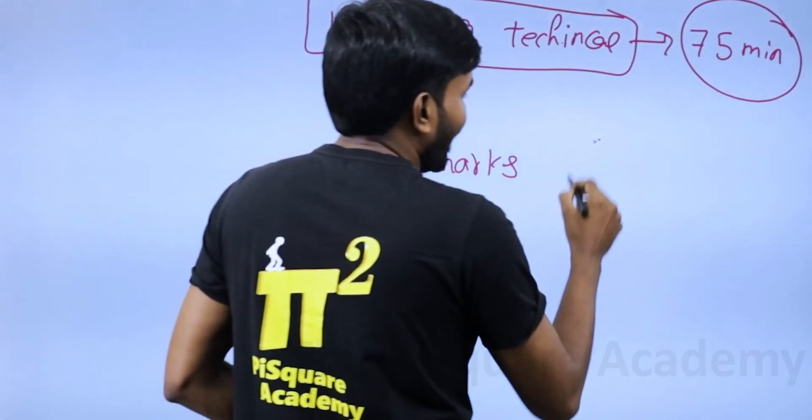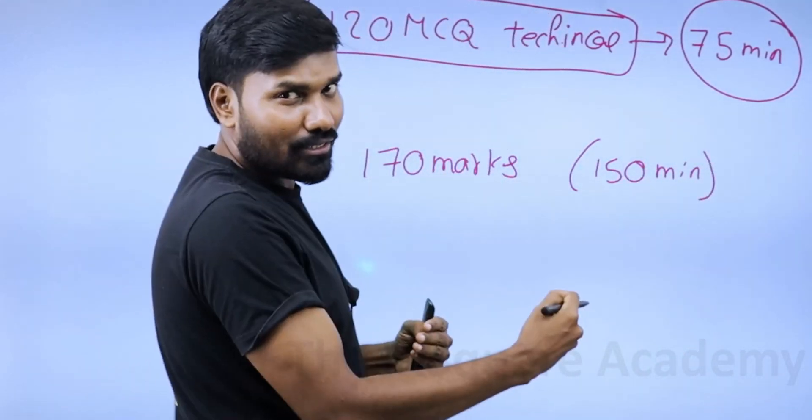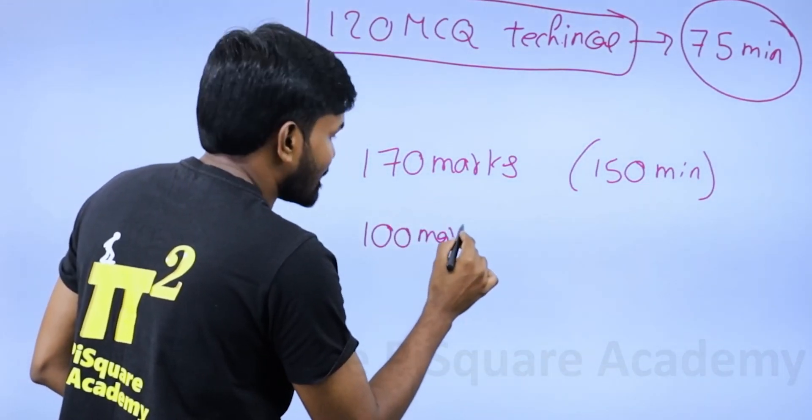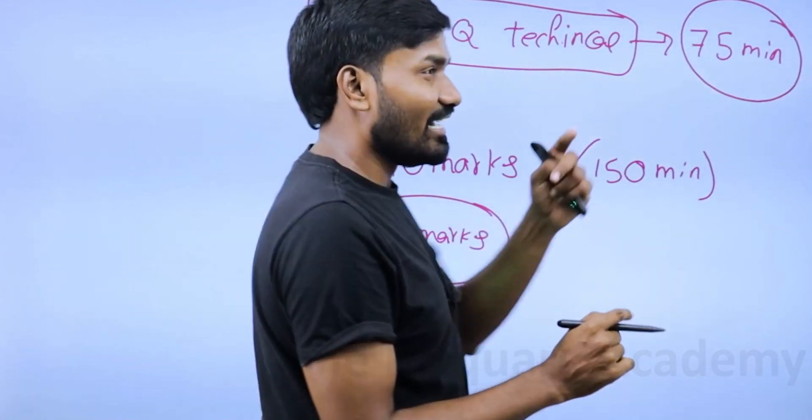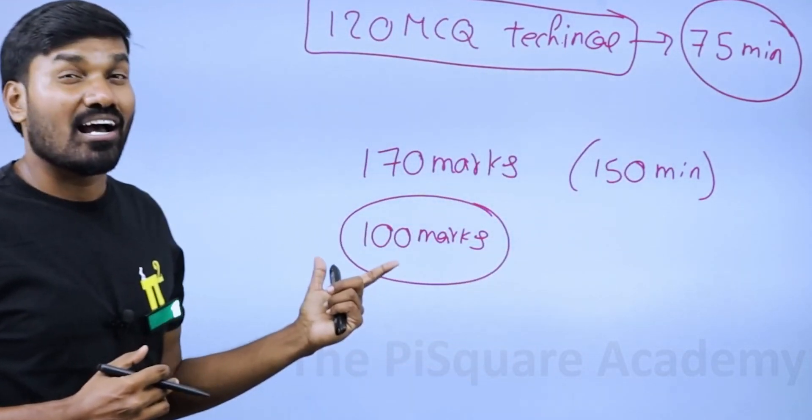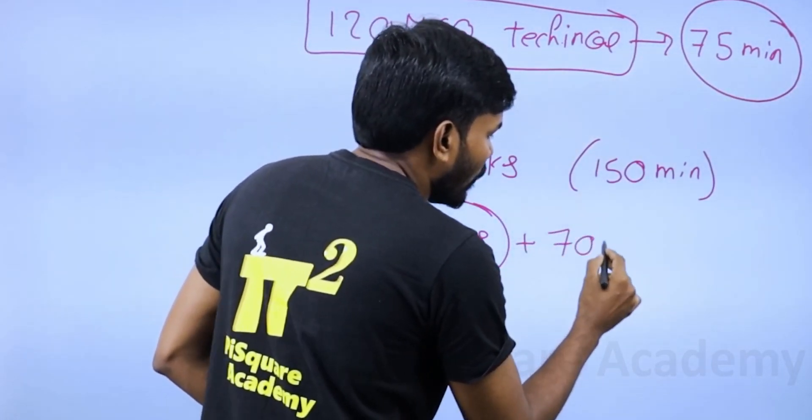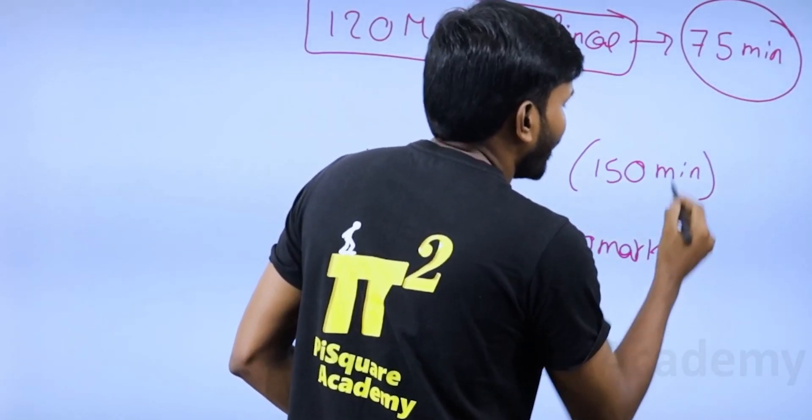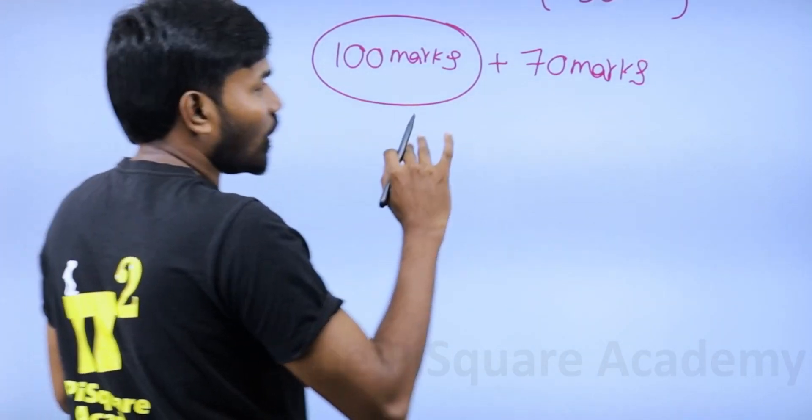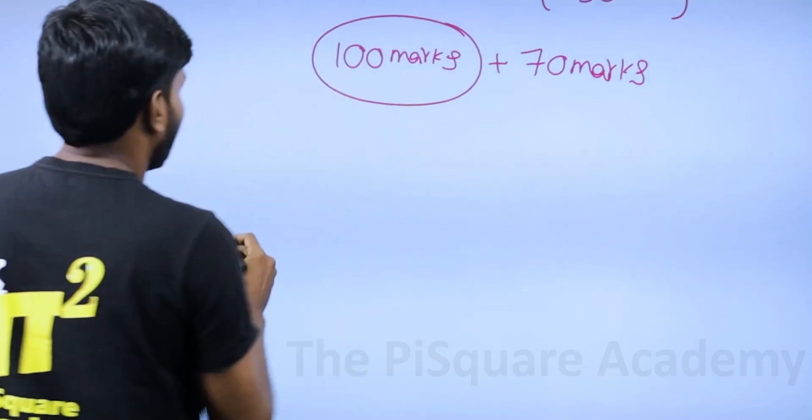170 marks in 150 minutes of time. Out of 170 marks, what I recommend is 100 marks - it is easy for you to score from your technical subjects. From your technical side, you can pretty much easily score 100 marks. And remaining 70 marks, you try to get it from non-tech. Here it is not quantitative aptitude. Let's talk about the exam pattern.